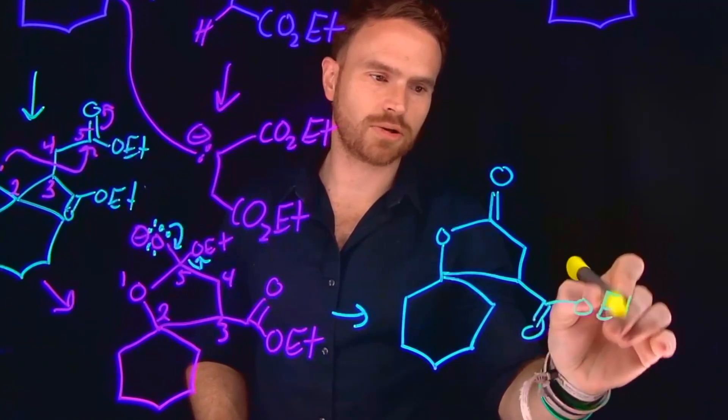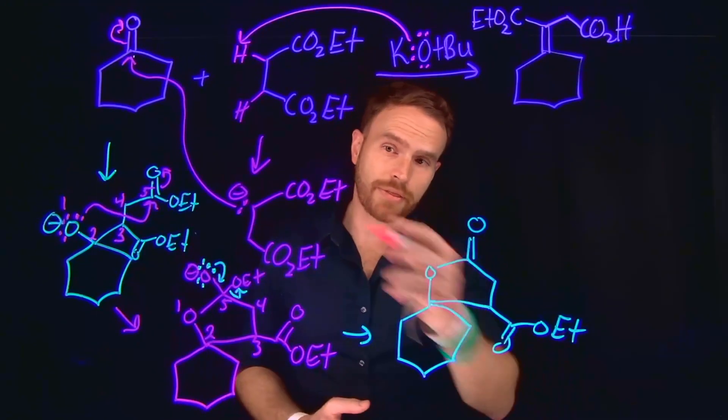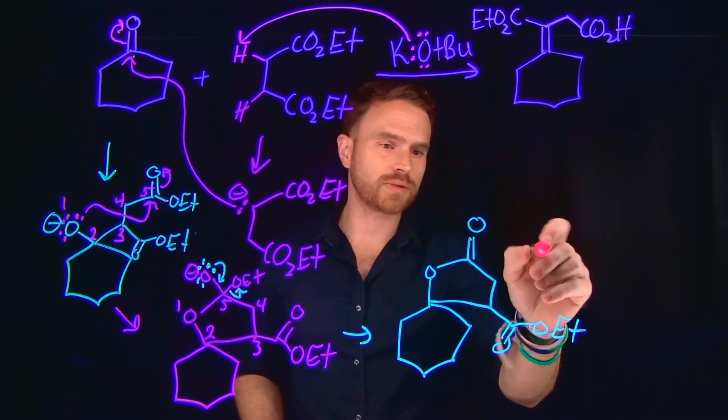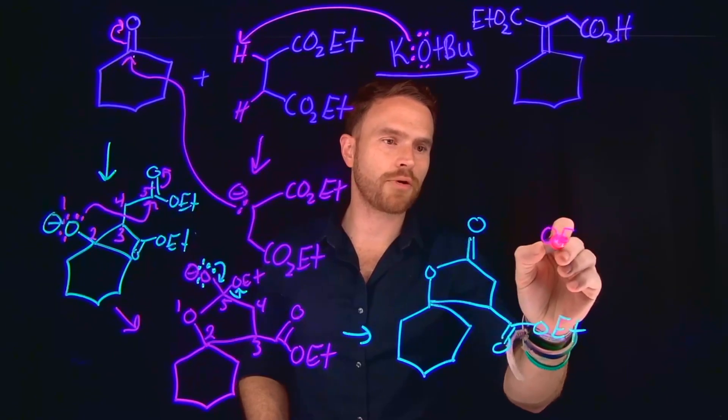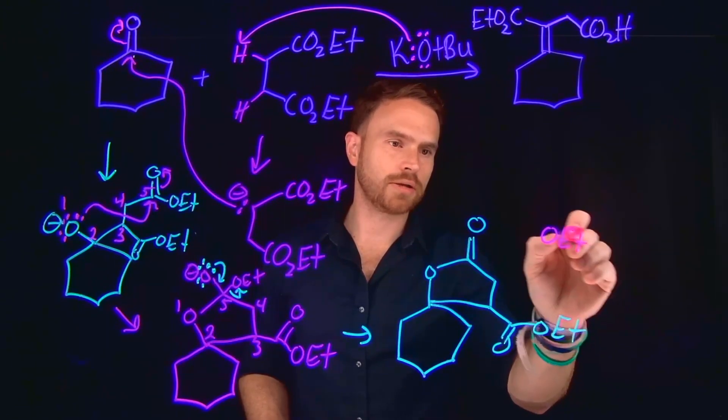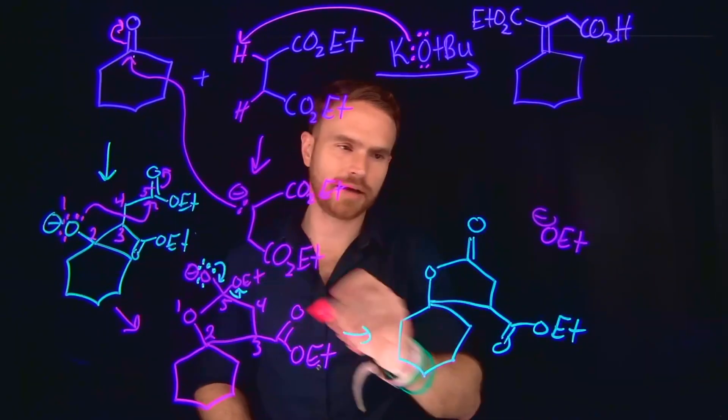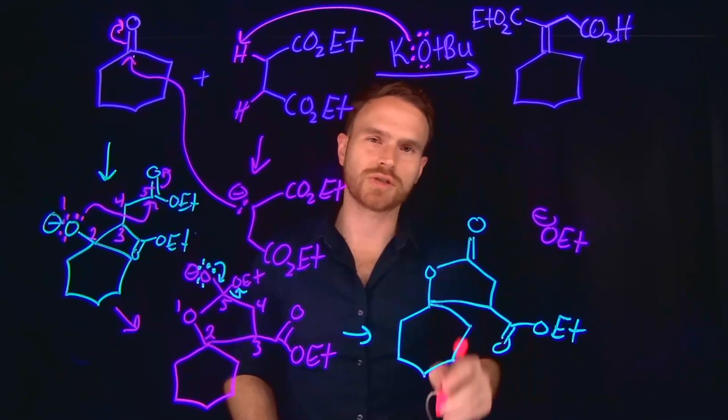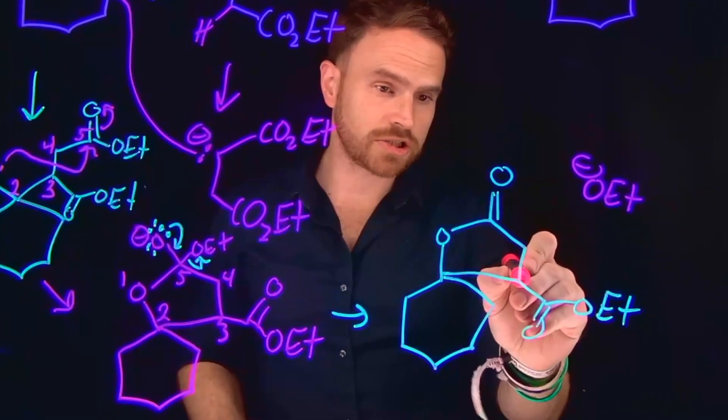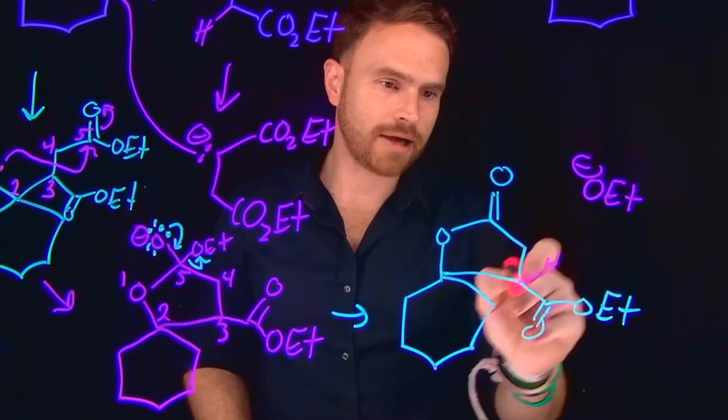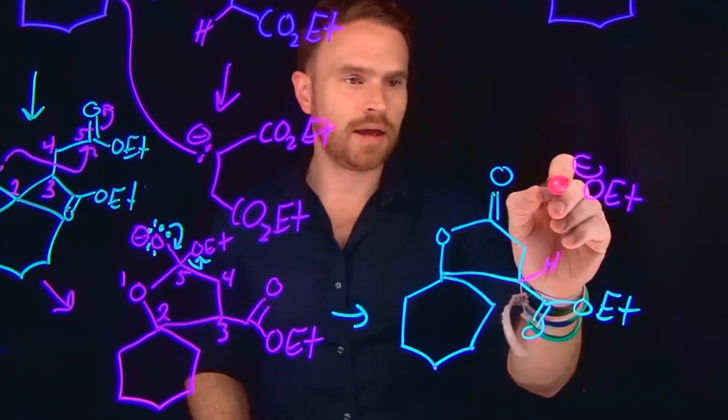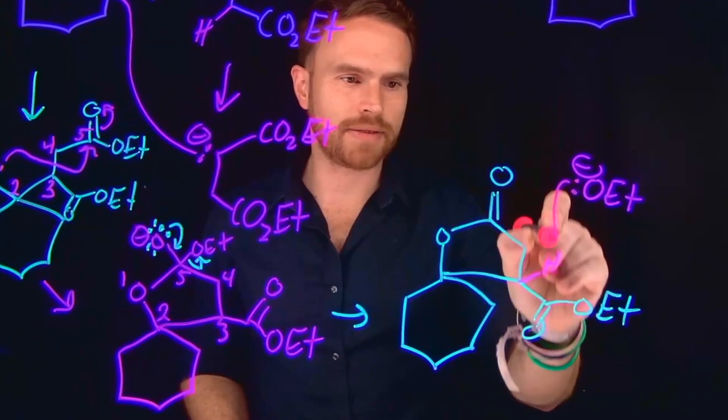Either that ethoxide that we kicked off here or another tert-butoxide can come in and do another alpha carbon deprotonation. Now we have that ethoxide that we kicked off, or again we could just use another one of these sodium tert-butoxides. At this position we have an alpha carbon hydrogen, which is going to be acidic, that can be deprotonated by this alkoxide.